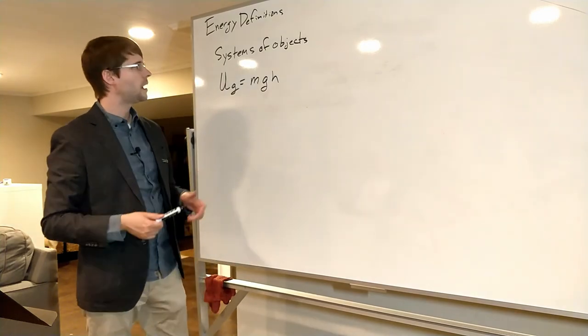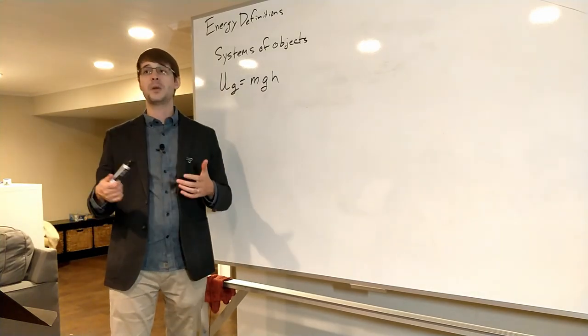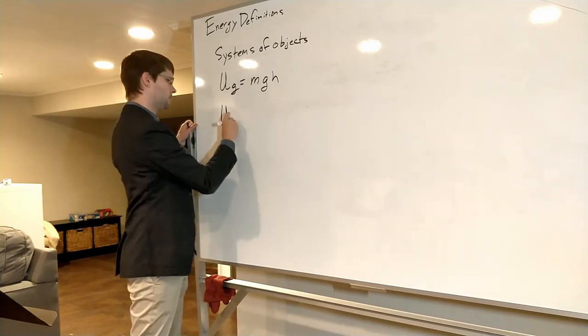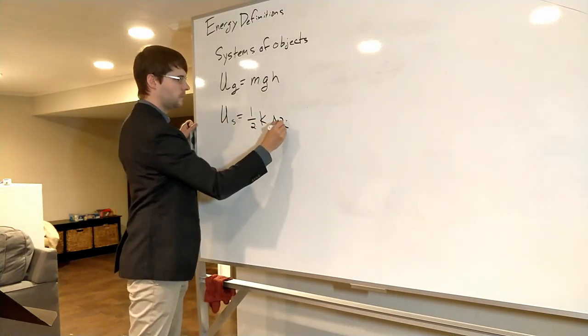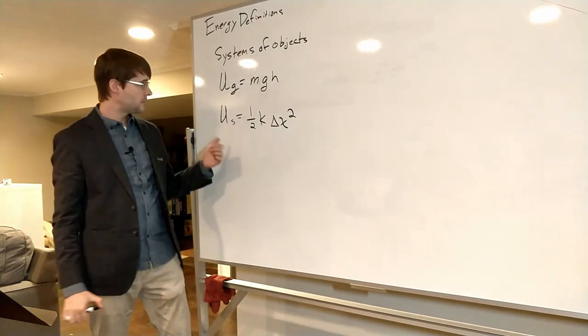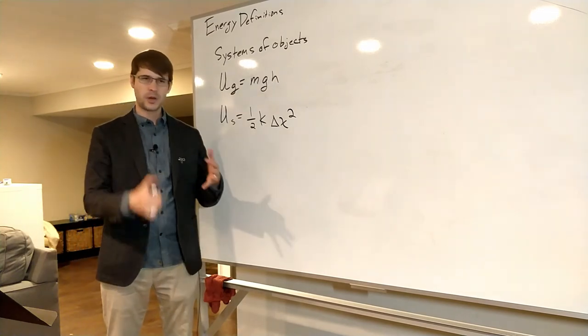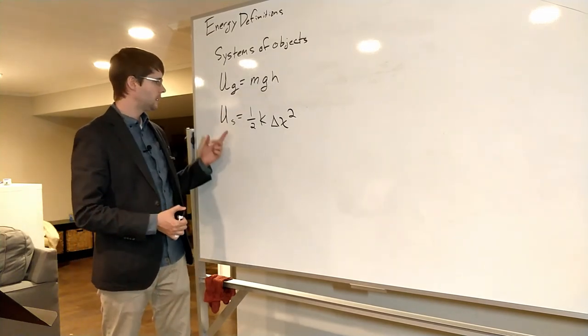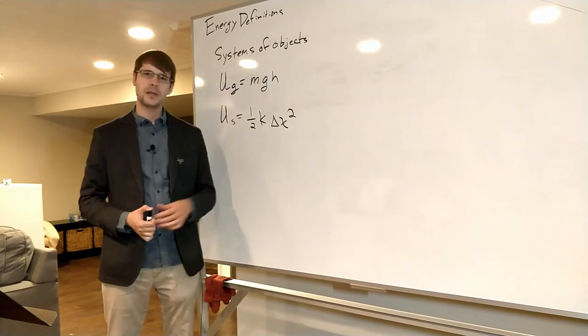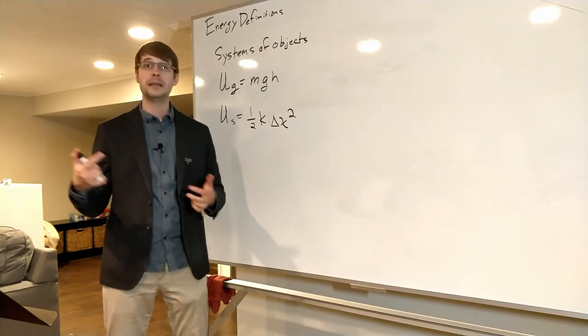Thinking about this idea of systems, another one we might have is in a system you might have a spring as one of the objects. If you have a spring in your system, or a spring connecting some objects in your system, then you can use this equation to talk about how much energy is stored in the spring and in the spring's compression or stretched-outness.